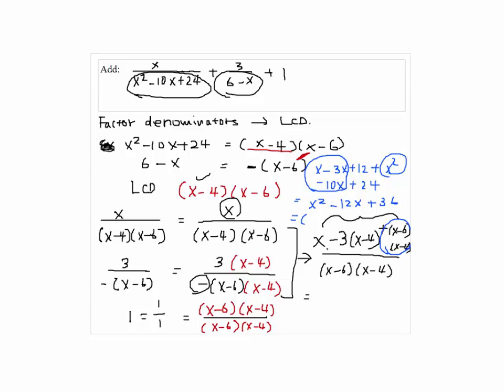And we can still factor this trinomial as x minus 6 squared. So we have x minus 6 squared or x minus 6 times x minus 6 on top and on the bottom, the LCD, x minus 6 times x minus 4. Since we can cancel the x minus 6, the answer will be x minus 6 over x minus 4.